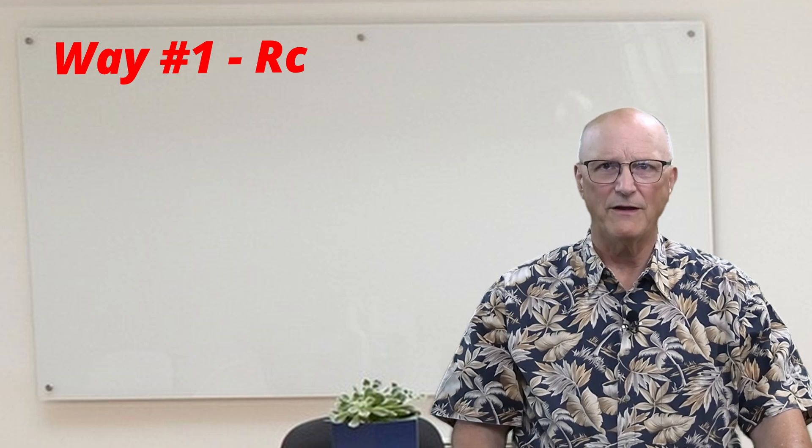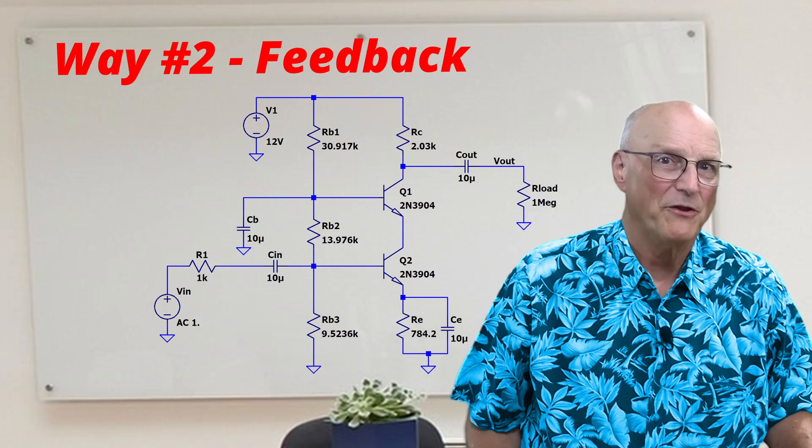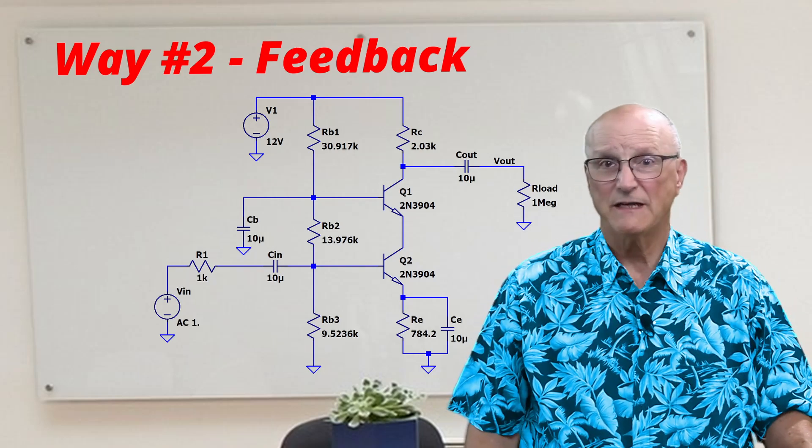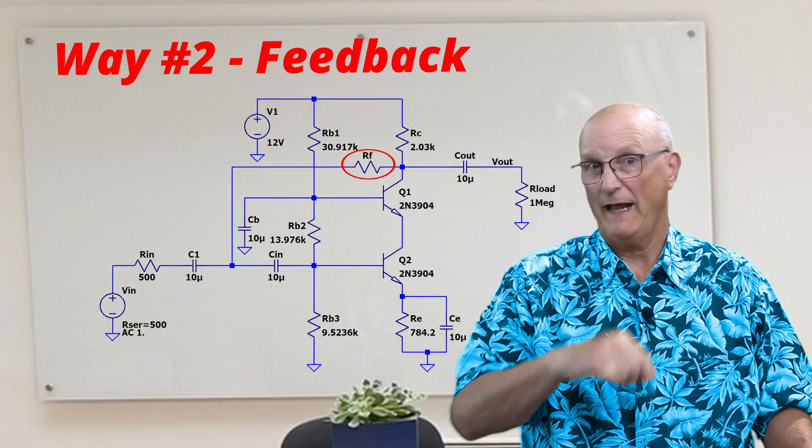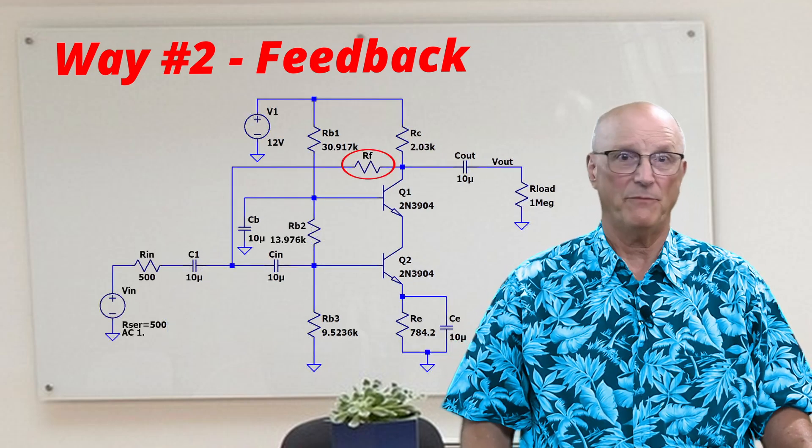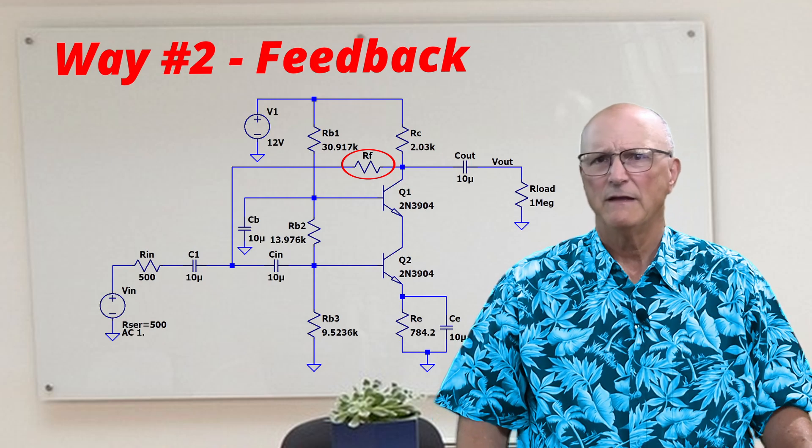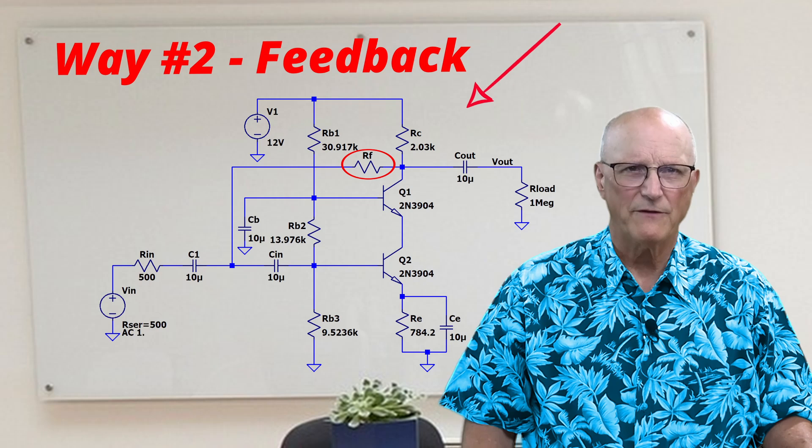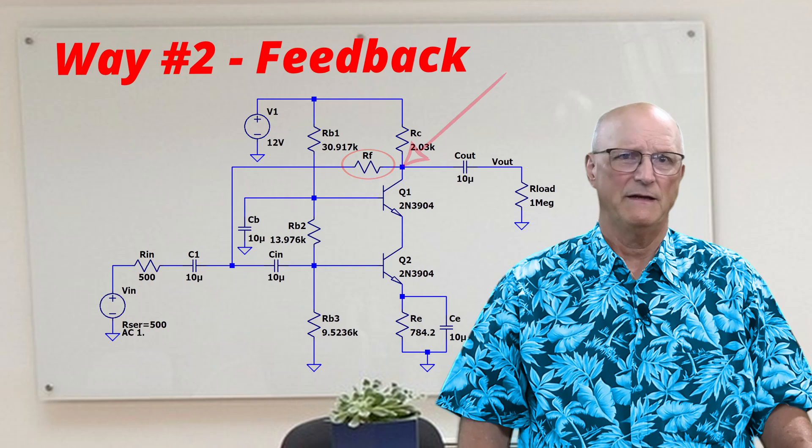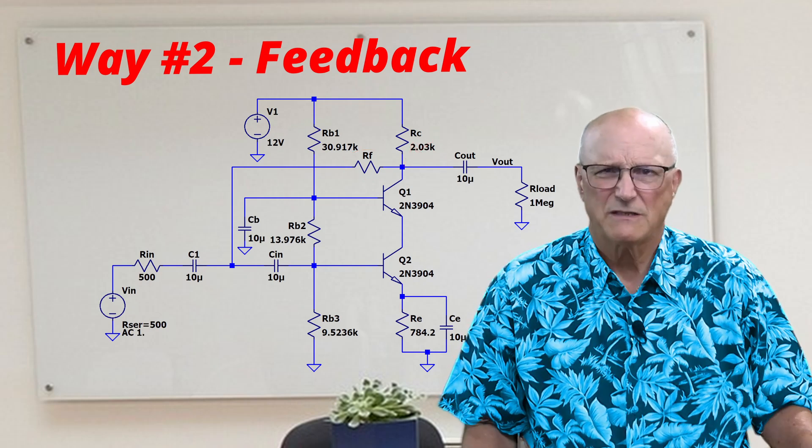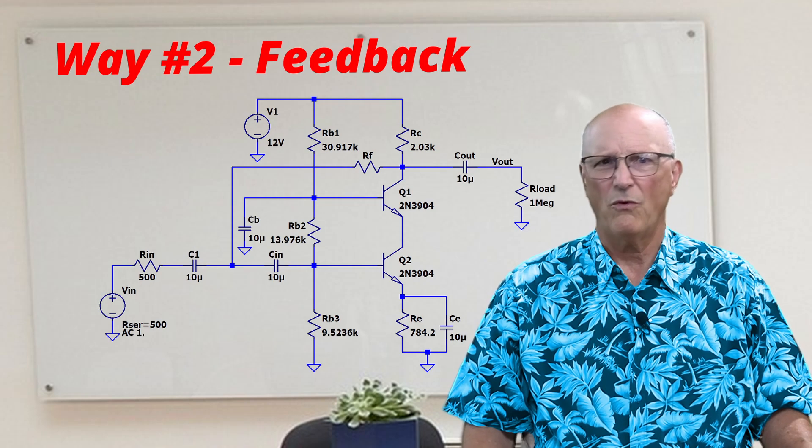The second method begins by completing the design just like we did in the last video. We add some negative feedback. Because the cascode amplifier is an inverting amplifier, this feedback comes directly from the output of the amplifier, as you can see here in this schematic. How do we know how much resistance to use?